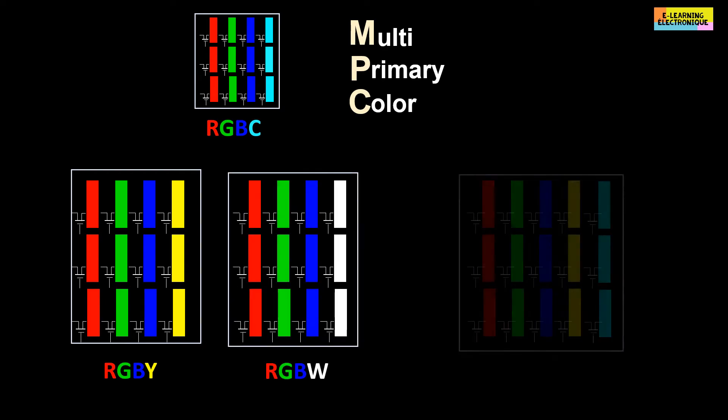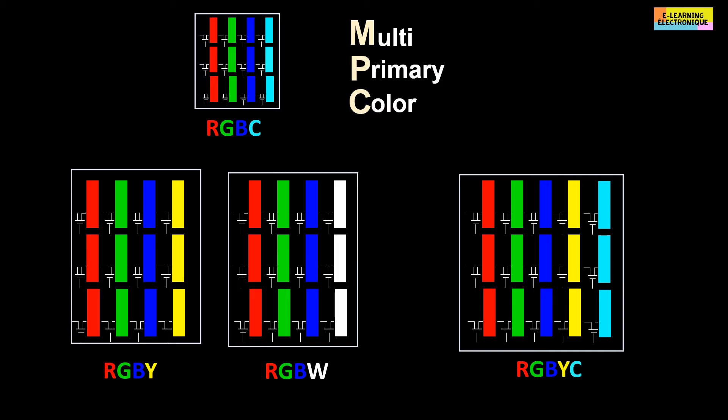Some have five sub-pixels: red, green, blue, yellow and cyan. Sometimes even six sub-pixels by adding magenta to the five previous colors.